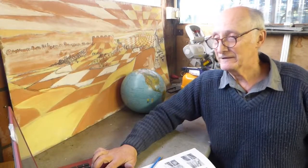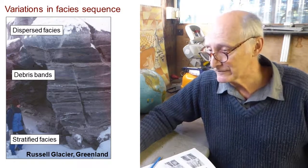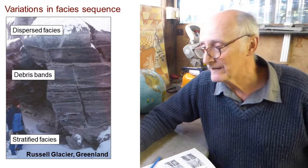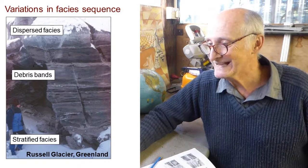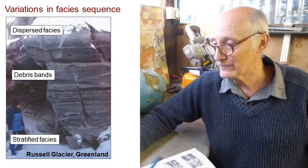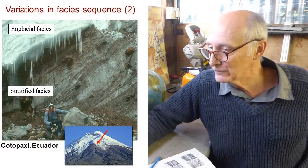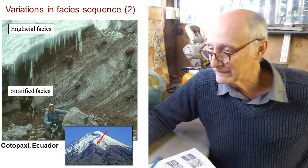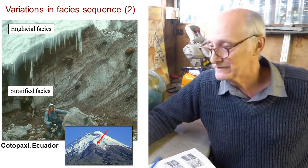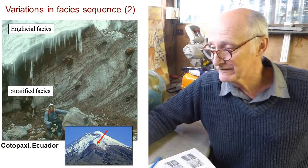These different facies occur in sequences of different types in different locations. At the Russell Glacier in West Greenland, we have a meter or so of stratified facies at the base, overlaid by several — maybe up to 10 or 15 meters — of dispersed facies, with debris bands cutting through into the dispersed facies ice. By contrast, at the summit ice cap of the volcano Cotopaxi in Ecuador, we have stratified facies at the bottom going straight up into englacial facies — no dispersed facies and no debris bands. A much simpler sequence.